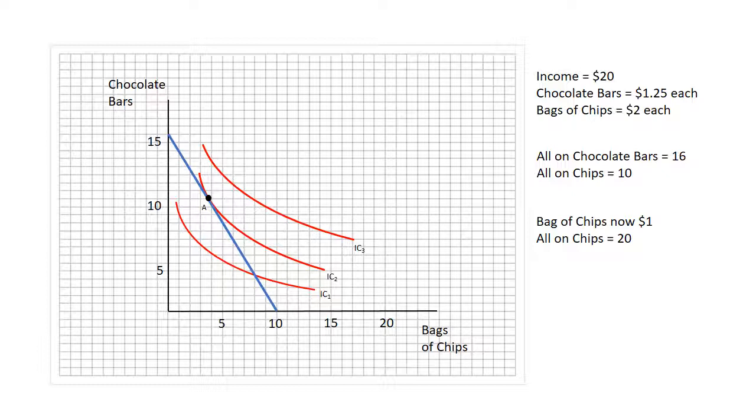Remember here only one price has changed, so we can still buy sixteen chocolate bars. Here's the new budget constraint where it intersects the bags of chips axis at 20 and the chocolate bar axis at 16.